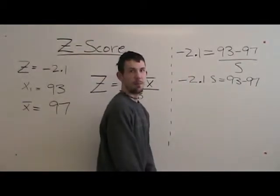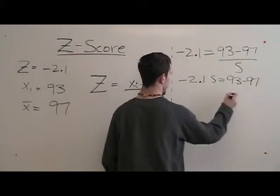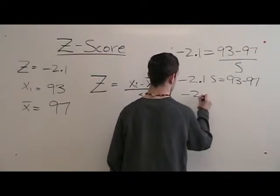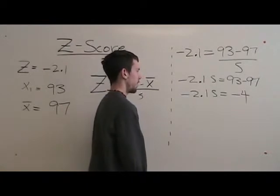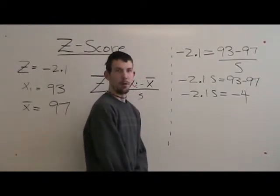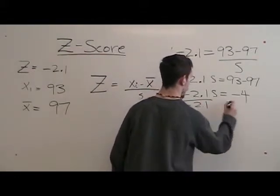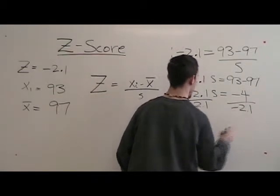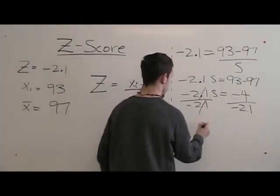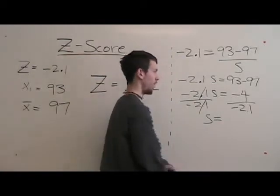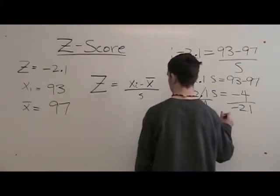The second step is taking 93 minus 97. The next step is divide both sides by negative 2.1. Negative 2.1 divided by negative 2.1 cancel each other. Therefore, the standard deviation is negative 4 divided by negative 2.1, which is 1.9.